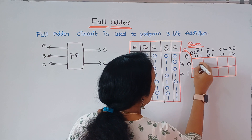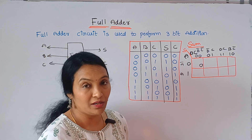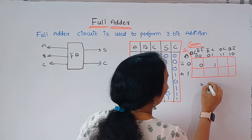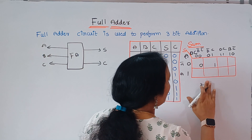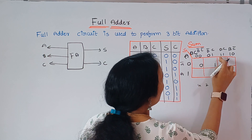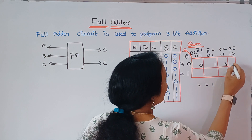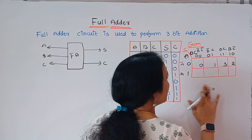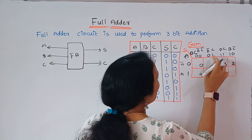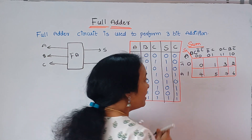We write the locations of the K-map using binary bits. Location 0 is 0,0,0; location 1 is 0,0,1; location 2 is 0,1,0; location 3 is 0,1,1; location 4 is 1,0,0; location 5 is 1,0,1; location 6 is 1,1,0; and location 7 is 1,1,1.